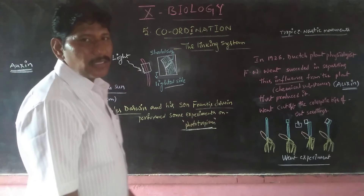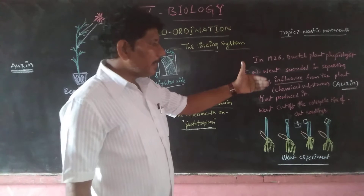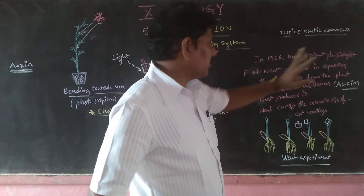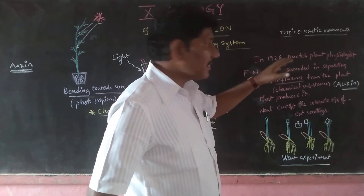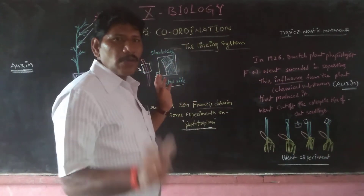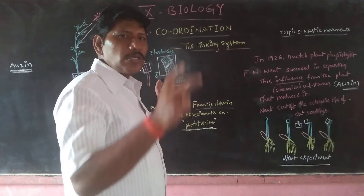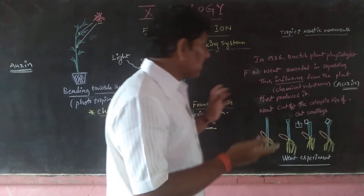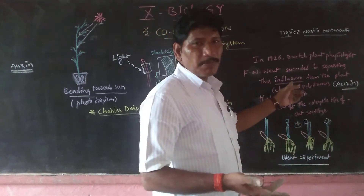This phenomenon was first noticed by Charles Darwin and his son Francis Darwin. It was then clearly studied by another scientist in 1926 — a Dutch plant physiologist named F.W. Went. F.W. Went succeeded in separating this influence — the chemical influence that causes bending towards sunlight. The Darwins identified it but were not succeeded in extracting it. That was achieved by F.W. Went's experiment.